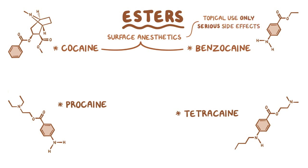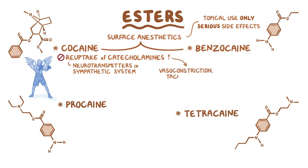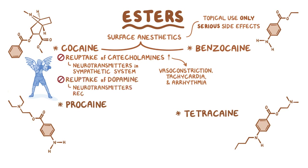Cocaine is the only local anesthetic that blocks the reuptake of catecholamines, which are neurotransmitters in the sympathetic system responsible for the fight-or-flight response. This causes catecholamines to build up, leading to vasoconstriction, tachycardia, and arrhythmia. It also blocks the reuptake of dopamine, a neurotransmitter that regulates the reward pathway — the increase in dopamine causes the euphoric feeling associated with cocaine and can lead to addiction.